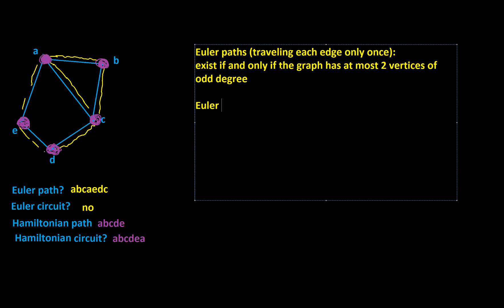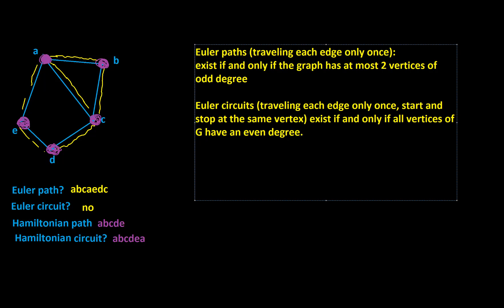And Euler circuits, again, you're traveling each edge only once, but you have to start and stop at the same vertex. You've got to come back home. These exist if and only if all vertices of G have an even degree. And then for Hamiltonian, we don't really have any shortcuts, so you really do have to go hunting around for those.